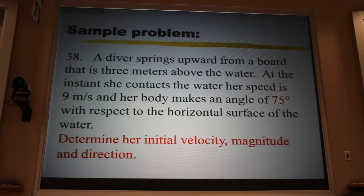Let's start with this practice problem here. You have a diver, and she springs upward from a board that's three meters above the water. At the instant she contacts the water, her speed is nine meters per second. If she had a magic speedometer in the belly, it would read nine right as her fingers touch the water. And she enters the water going at an angle of 75 degrees with respect to the surface of the water.